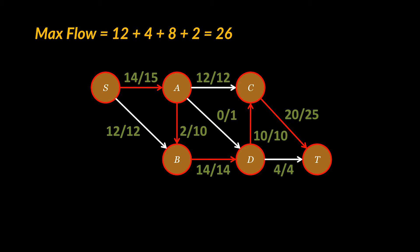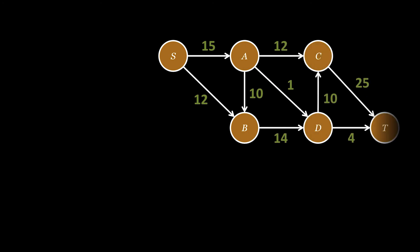The last two units we can manage to squeeze are through this path. And after that we can say that our hands are pretty much tied and that the max flow of this graph is 26 as you can see.